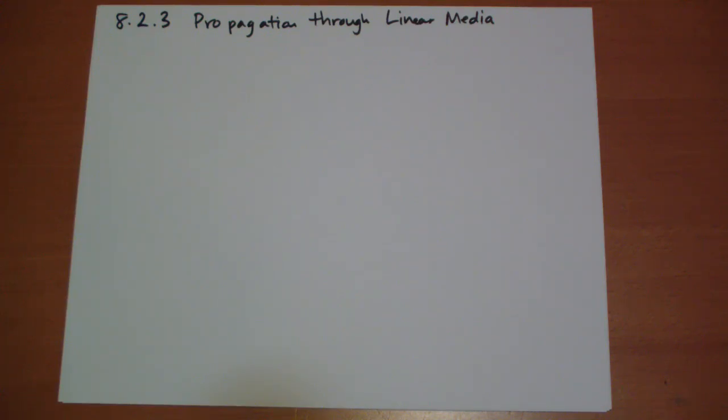Hi, this is Jonathan Gardner. This is a very short video on Section 8.2.3 of Griffith's Introduction to Electrodynamics. We're covering how monochromatic plane waves behave in linear media as opposed to a vacuum.